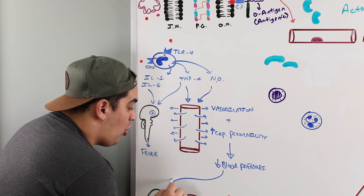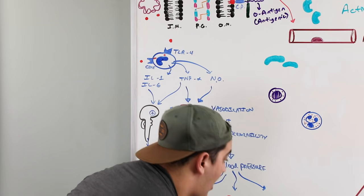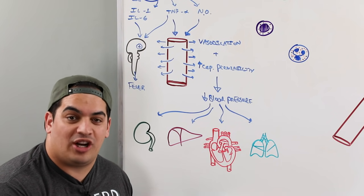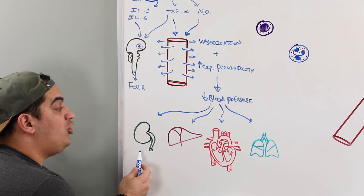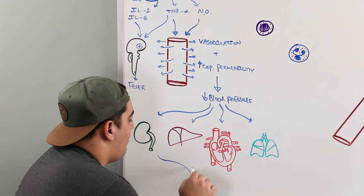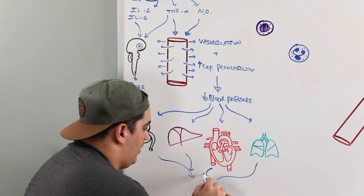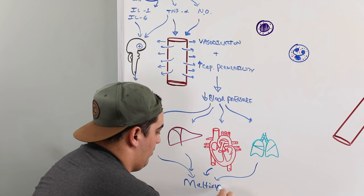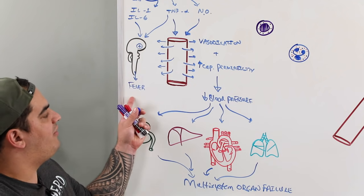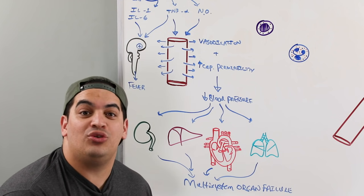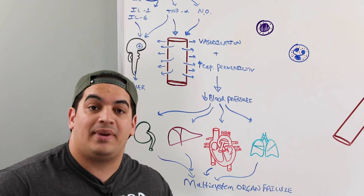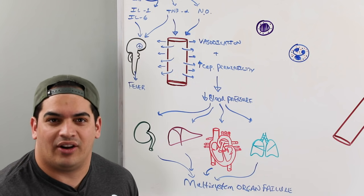The overall effect of these two things is hypotension. Sustained hypotension causes devastating side effects on multiple organs because tissues aren't being perfused — they don't get oxygen, can't generate ATP, and can't perform their functions. This leads to acute renal failure, acute liver failure, heart failure, and impaired oxygenation of blood — resulting in multi-system organ failure.